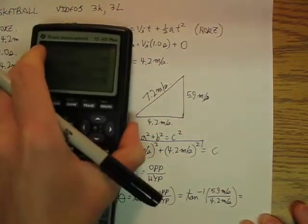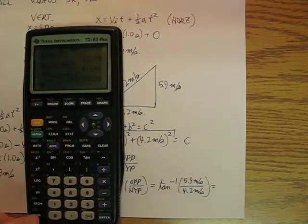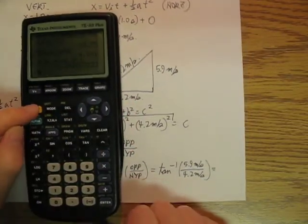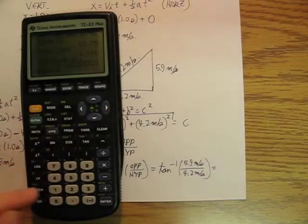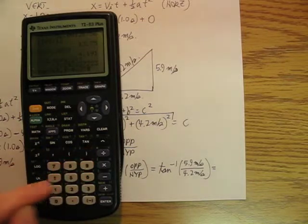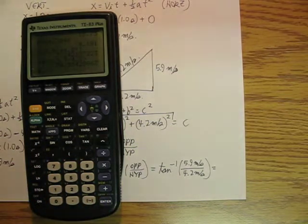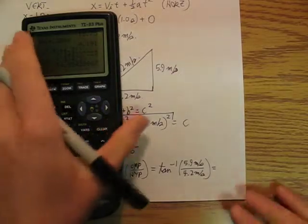And so I'm going to do that out here, so shift tan 5.9 divided by 4.2, I'm going to get 54.5 degrees, so call it 55 degrees.